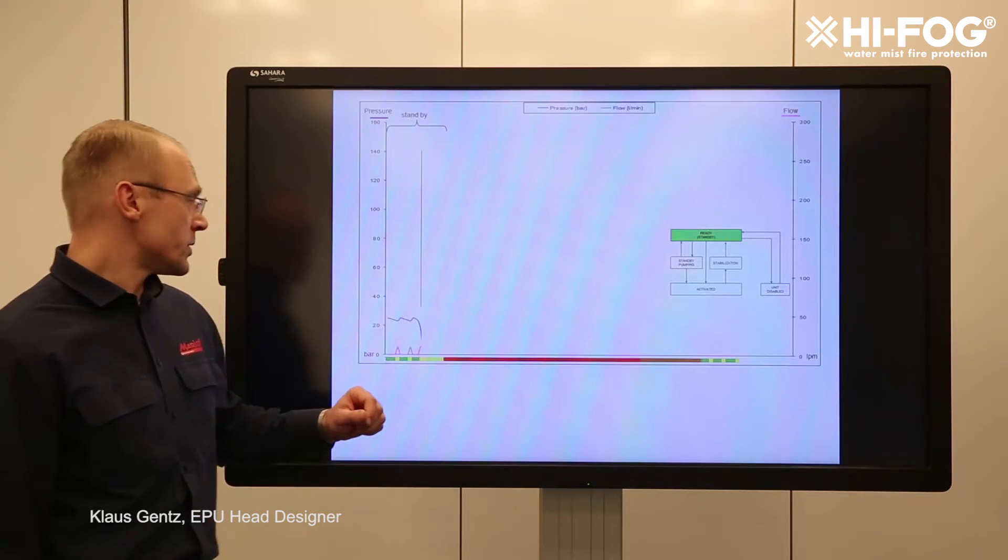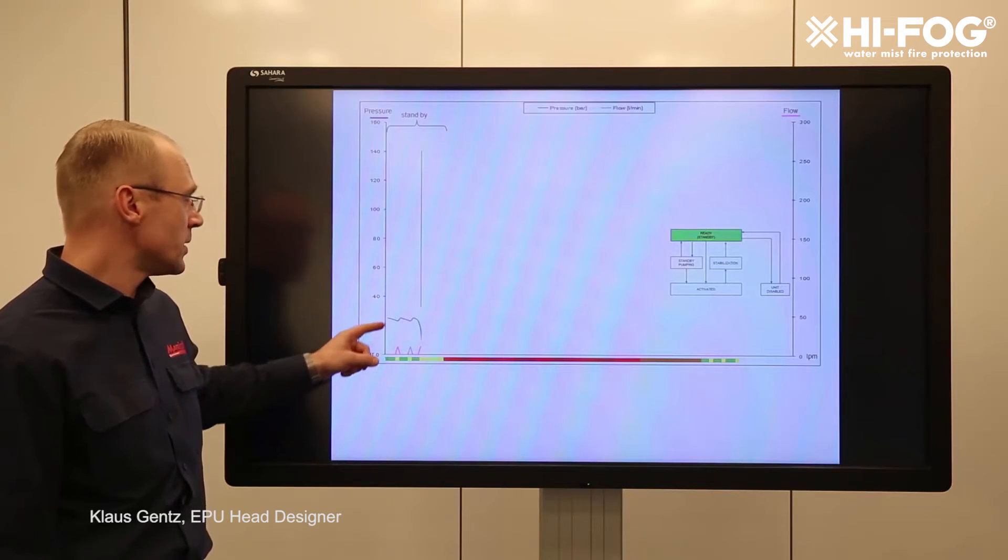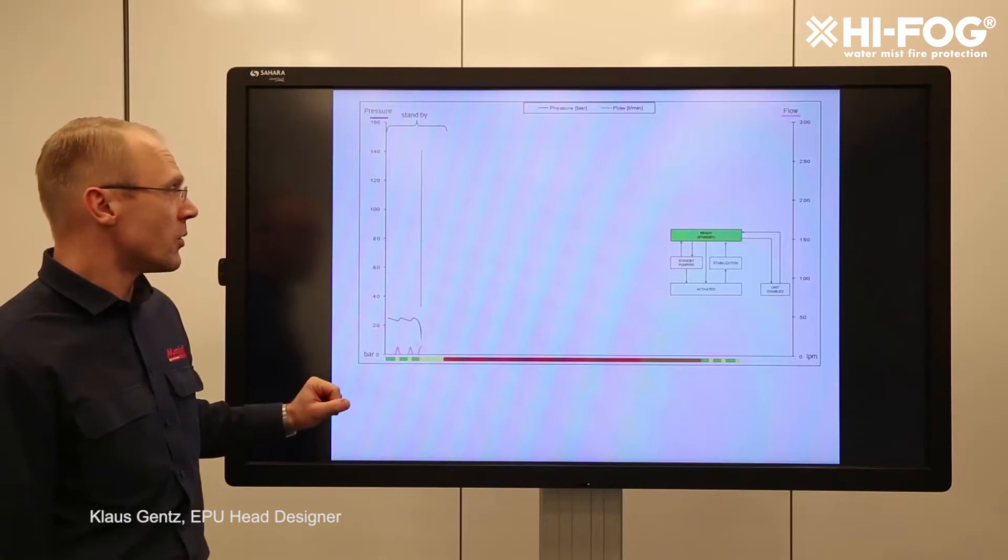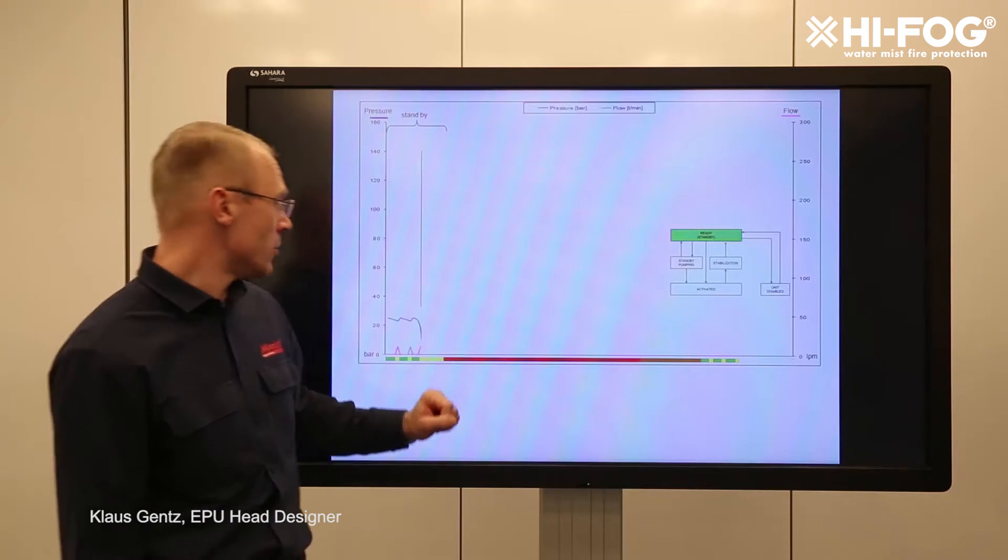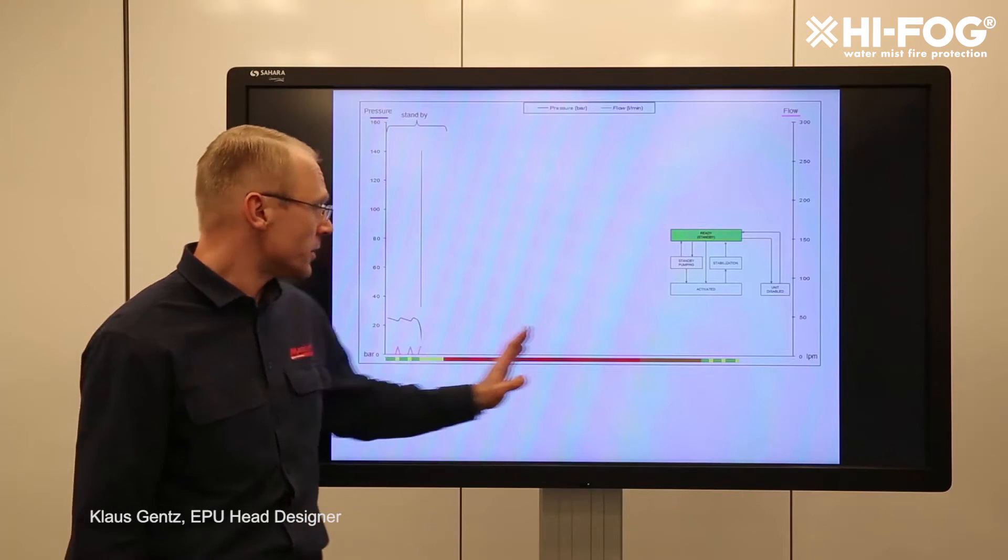On the left hand side you can read the pressure and that's the blue line. On the right hand side you can read the flow and that would be the red line and the timeline is on the bottom here.